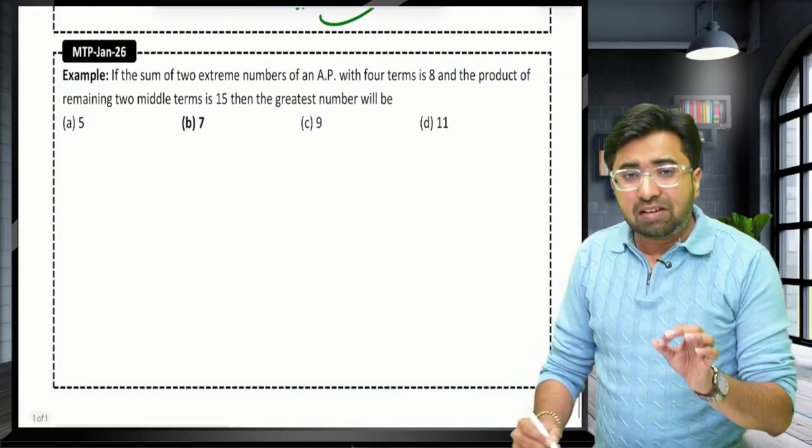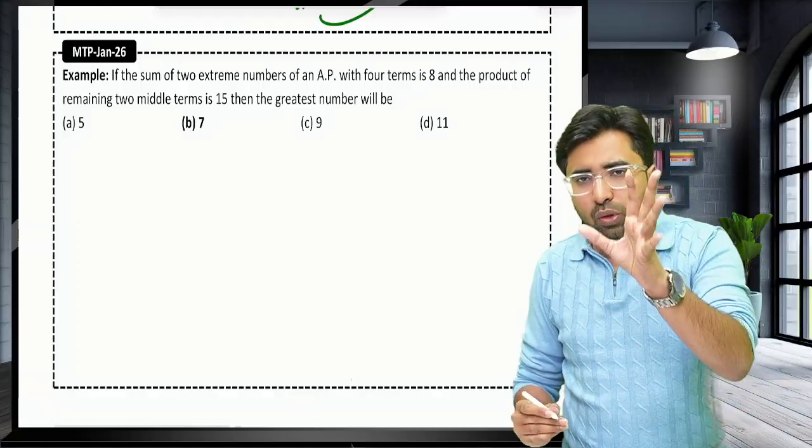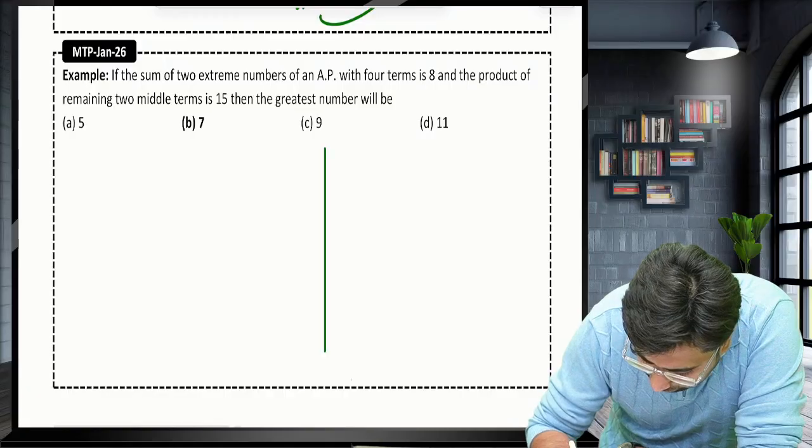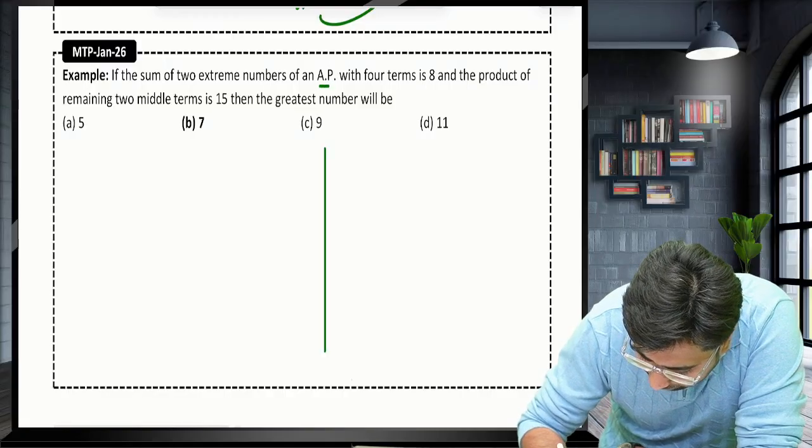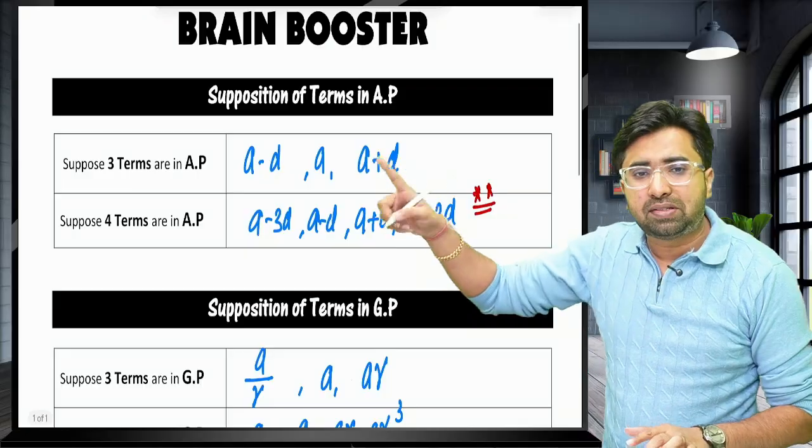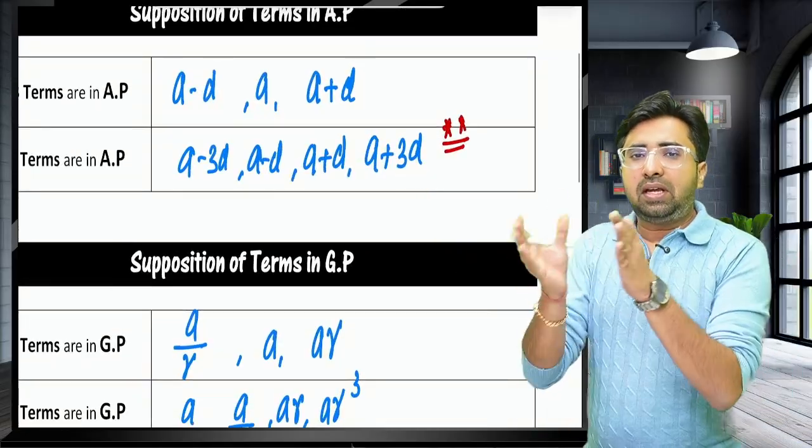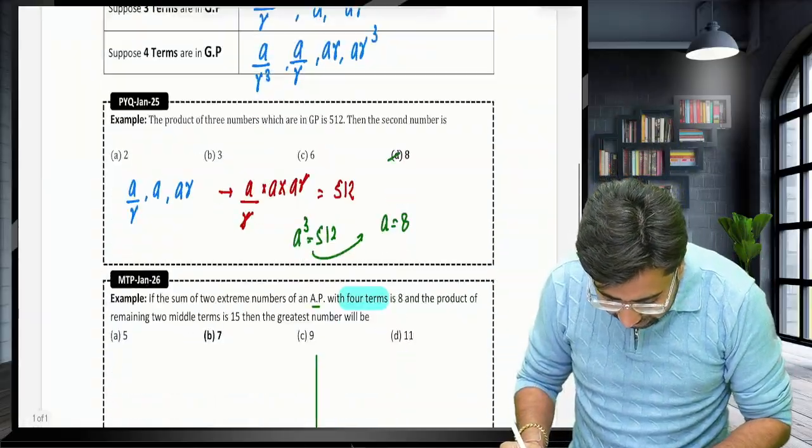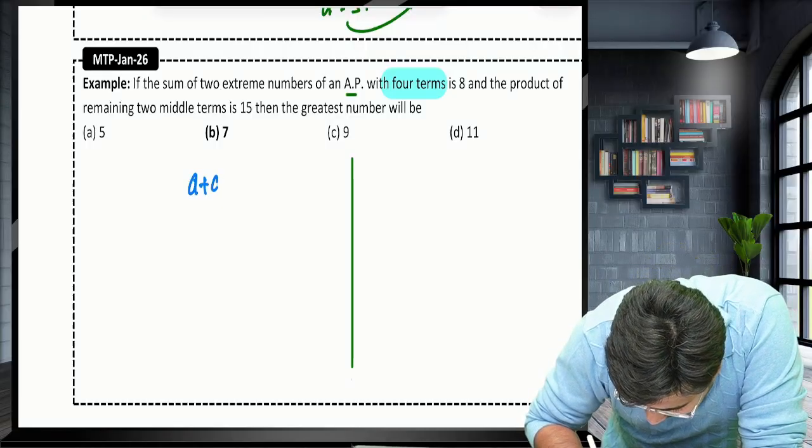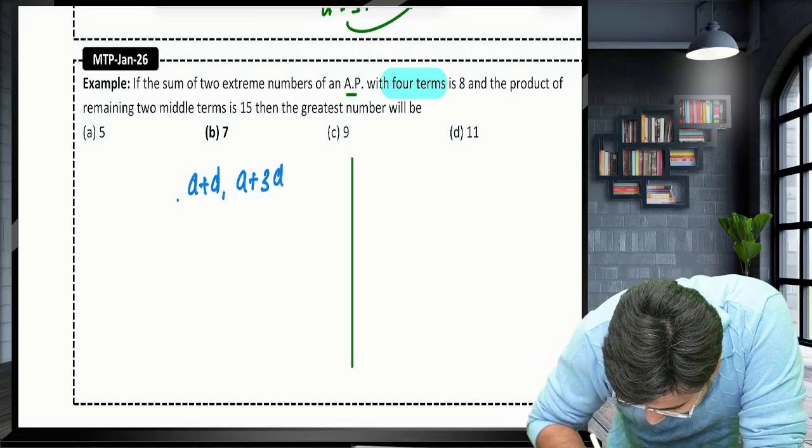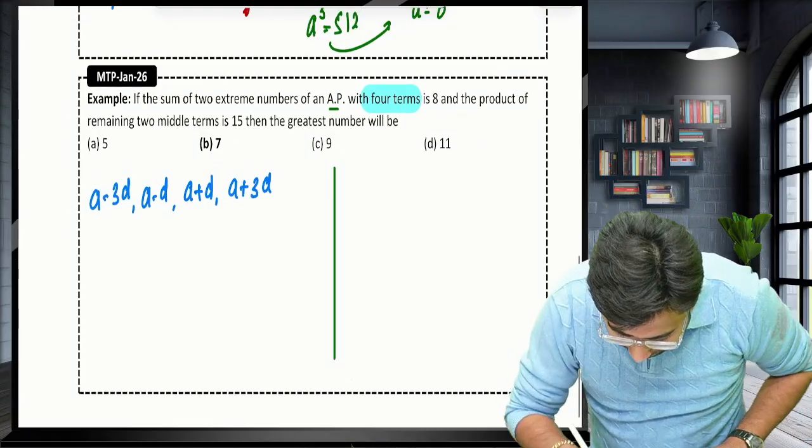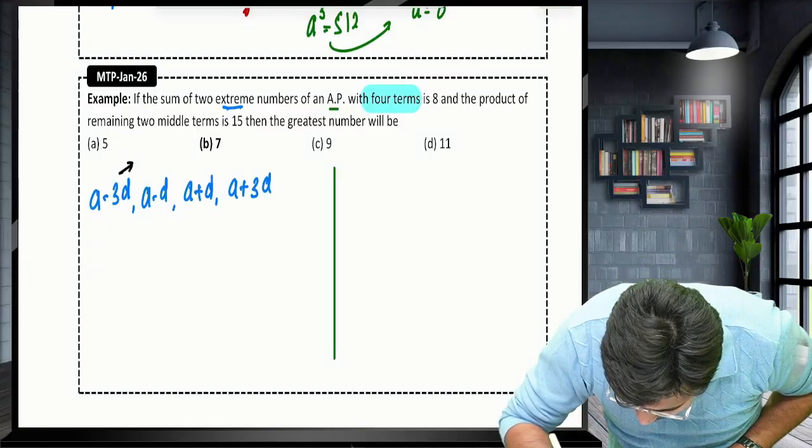Now let's look at the question of MTP, January 2026, very beautifully drafted and new question from the institute. Very relevant for the exam. If the sum of 2 extreme numbers of AP with 4 terms, here I have to assume 4 terms which are in AP. So for 3 terms, you can assume A minus D, A, A plus D. But for 4 terms, assume A minus 3D, A minus D, A plus D, A plus 3D. For 4 terms, I will assume A minus 3D, A minus D, A plus D, A plus 3D.